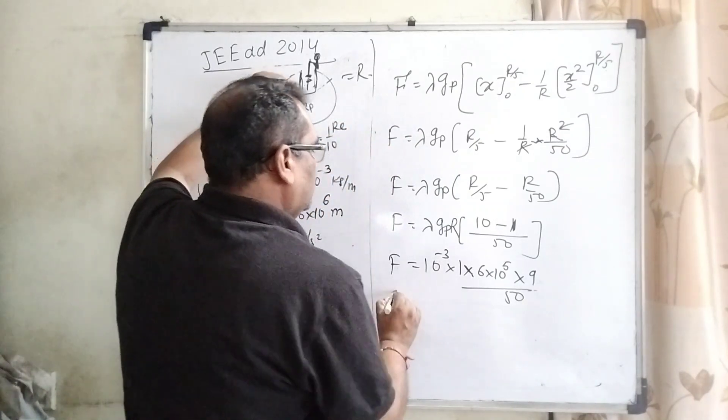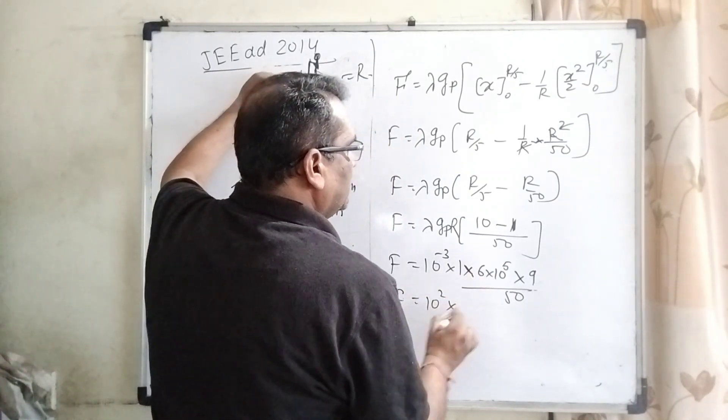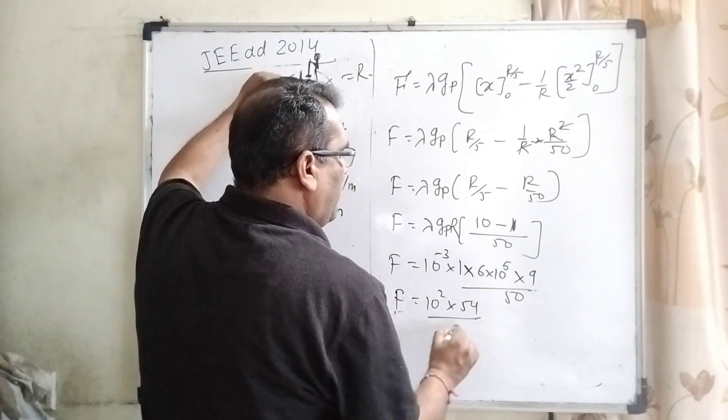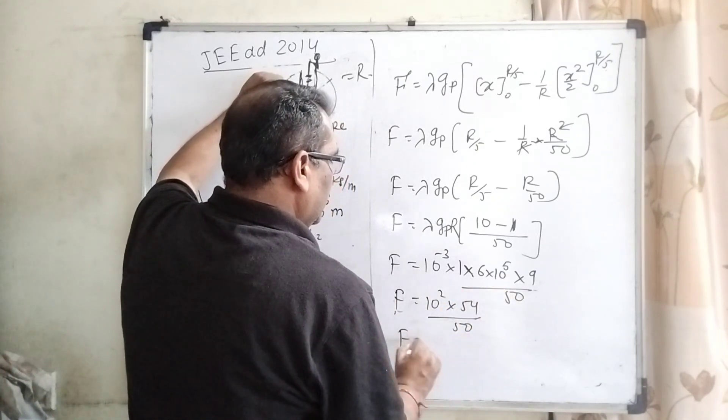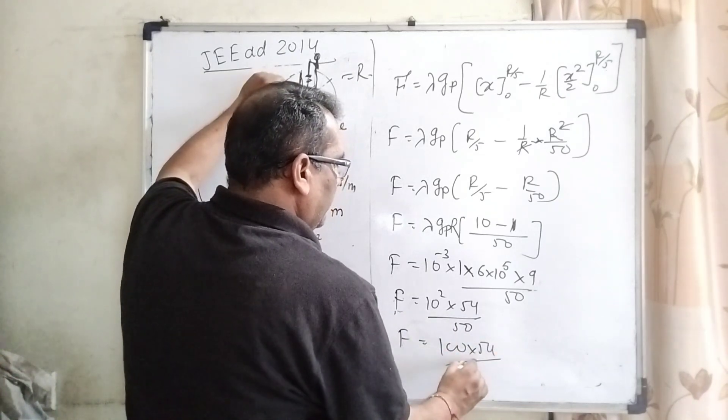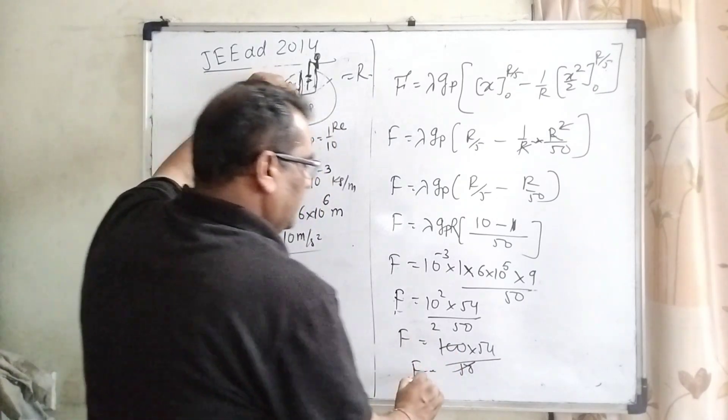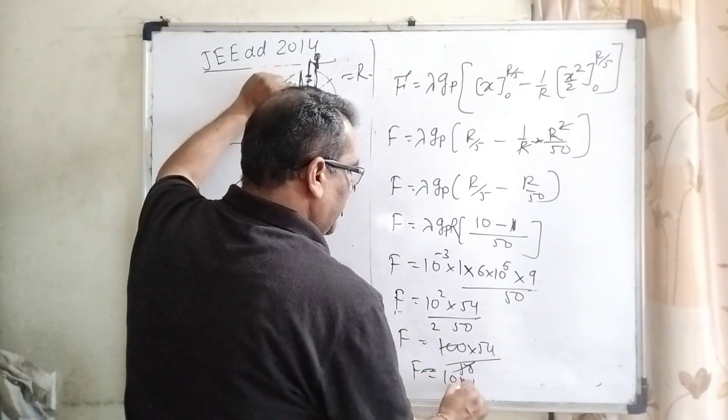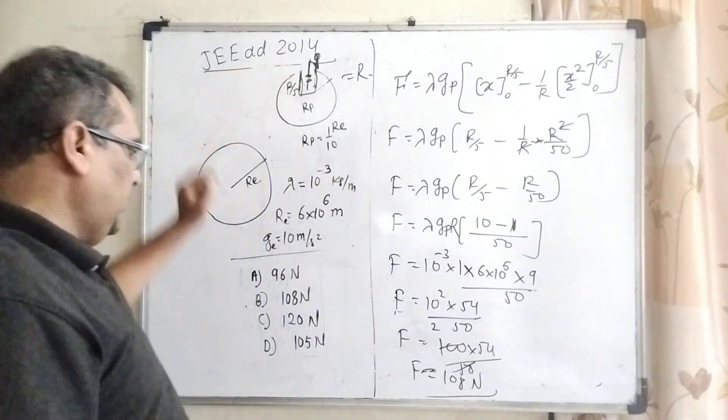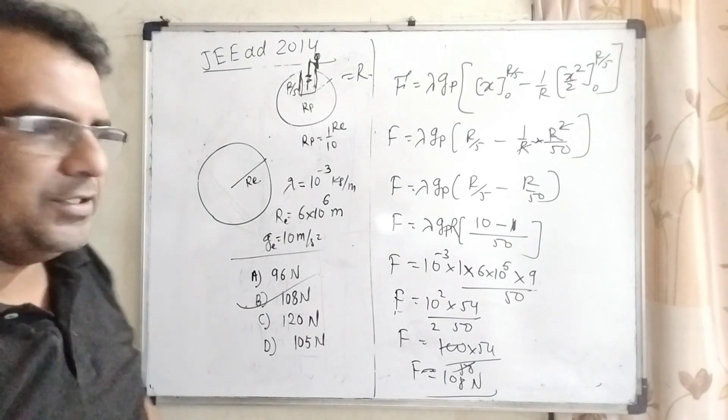Then, f equal to 10 raised to power 2, 6 nines are 54, 50, f can be 100, 50 to the 100, 54 to the 108 Newton. So, let me see. Yes, second option is correct, 108 Newton. I hope so you understand this question.